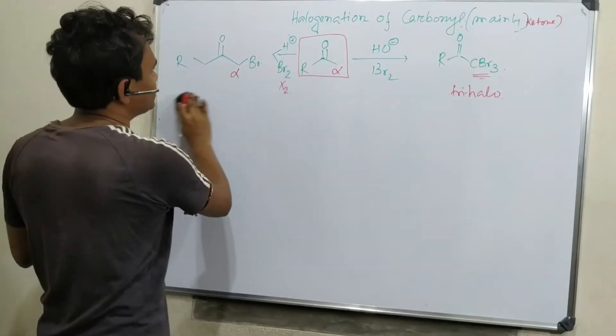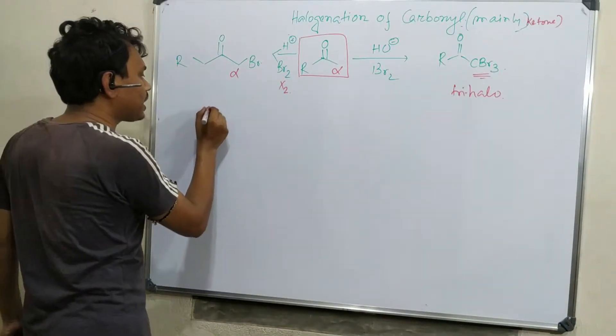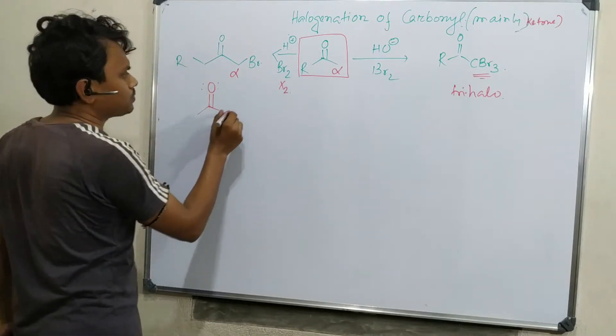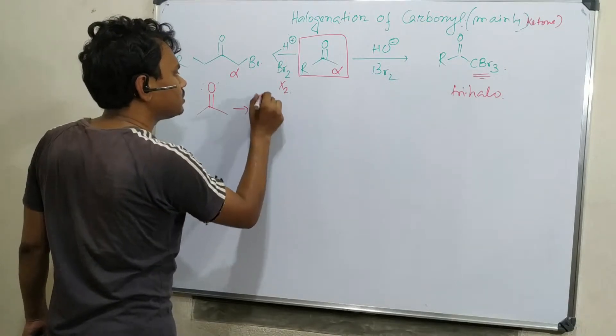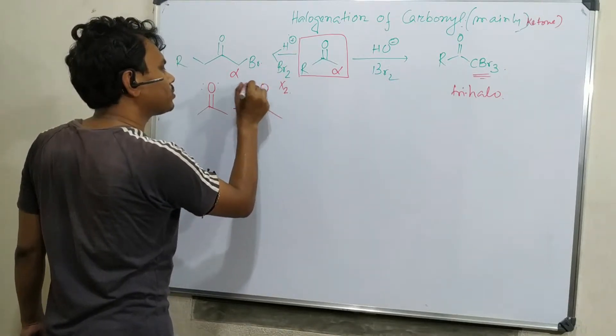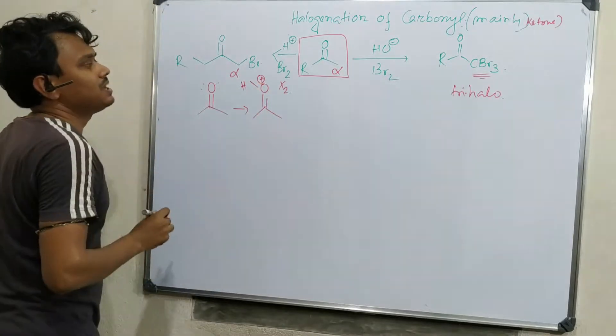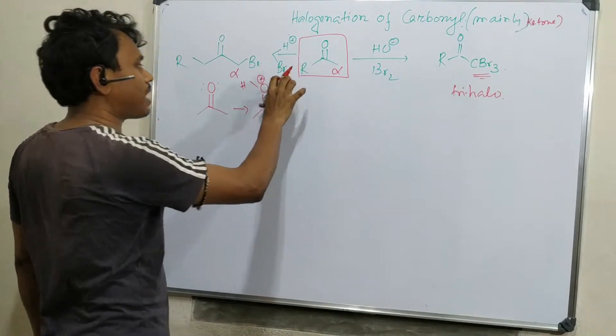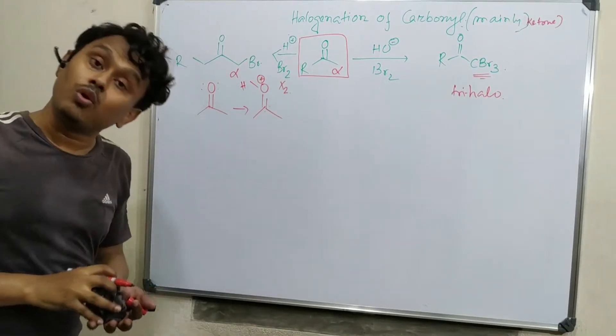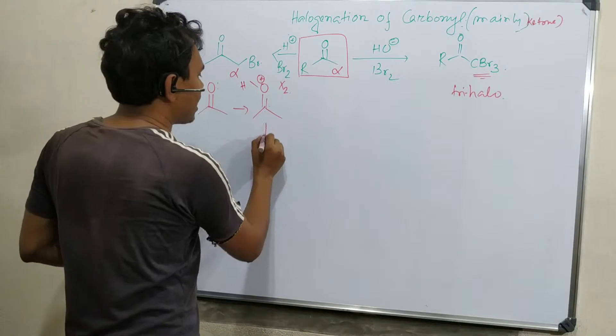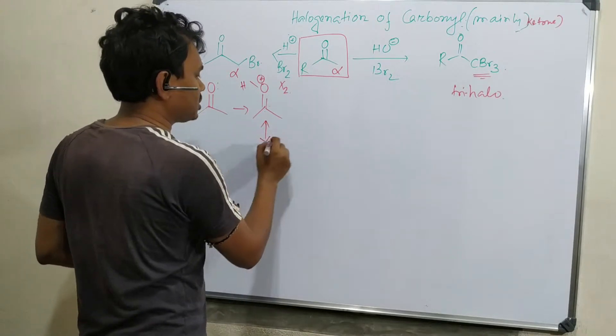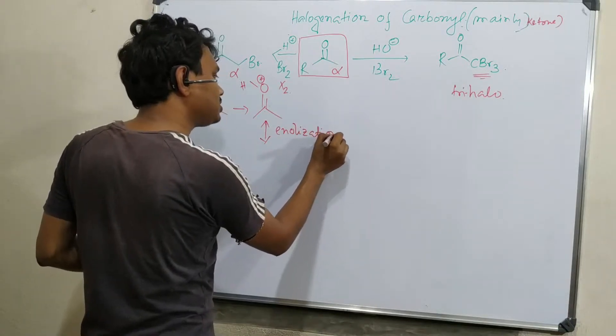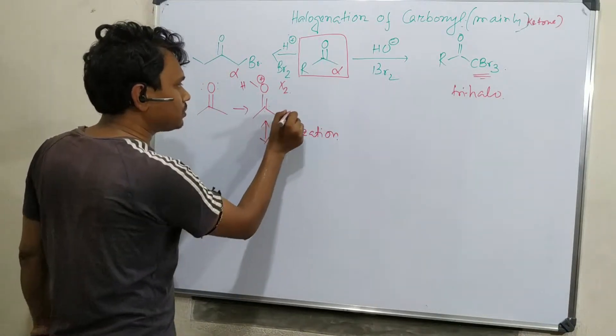Let's first explain the acidic condition. In carbonyl chemistry, as I explained in my previous video, this gets protonated to produce a protonated form with formal charge on oxygen. This has resonance, it can withdraw and positive charge will come here. After protonation, this becomes even more electron deficient, so it undergoes tautomerization or enolization.